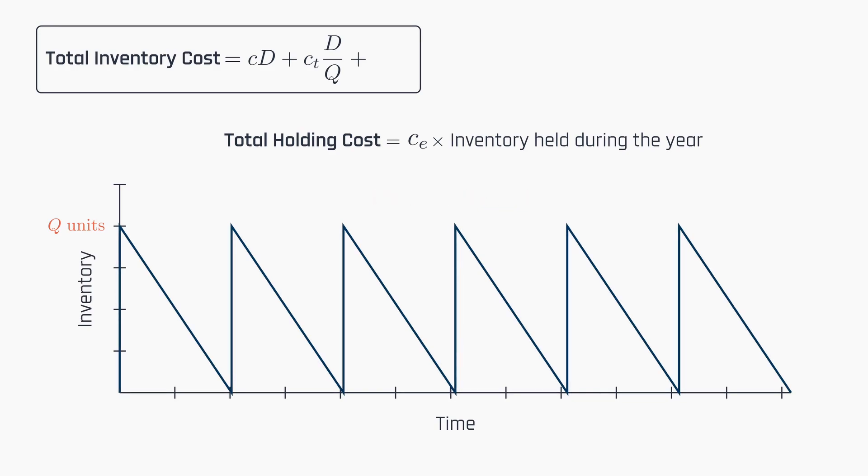So, to streamline calculations, the average inventory level is used as the amount held over the year, which is taken as the lot size Q over 2.